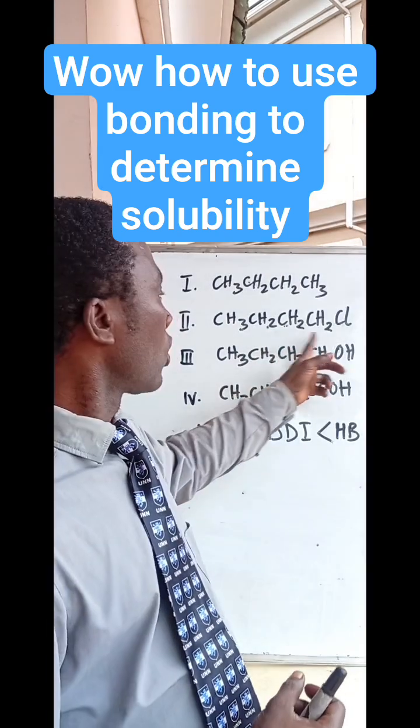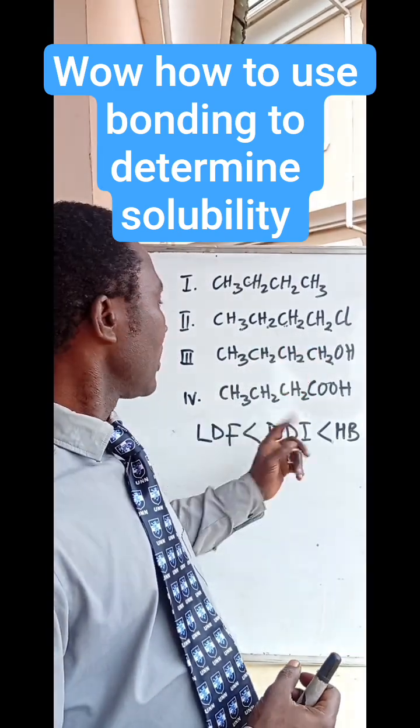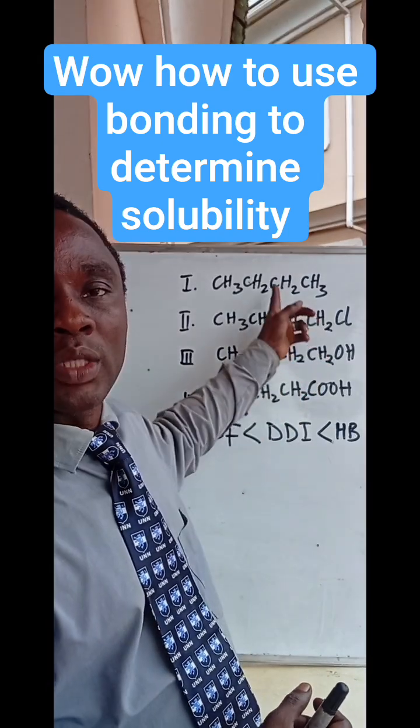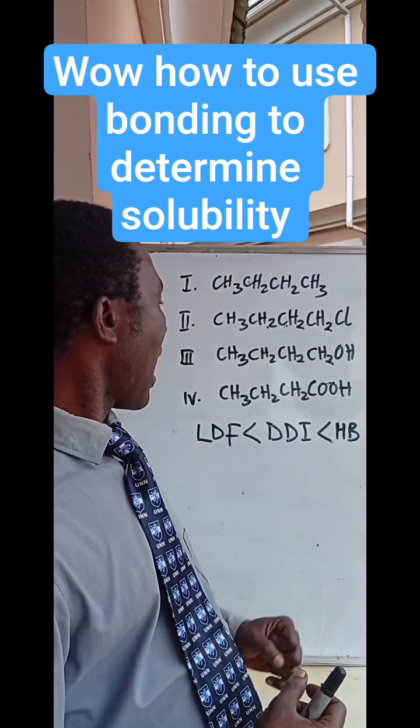This is butane, I mean chlorobutane. Chlorobutane is what? It's haloalkanes. So you have dipole-dipole interaction. It's more soluble than the so-called alkanes.